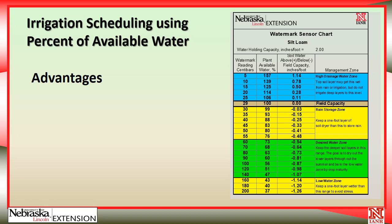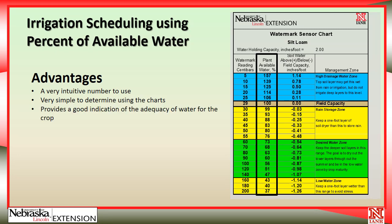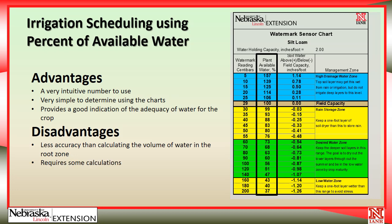Now let's look at irrigation scheduling using percent of plant available water — that's the second column on the chart. Field capacity is 100 percent of plant available water. As we go up into the blue zone, numbers exceed 100 percent — that's water above field capacity that will drain away over time, but the crop can utilize it before it goes. As the numbers go below field capacity, they drop below 100 percent. Advantages: it's a very intuitive number, simple to determine using the chart, and provides good indication of water adequacy for the crop. The disadvantage is it's less accurate than calculating volume of water in the root zone, and it still requires some calculation.